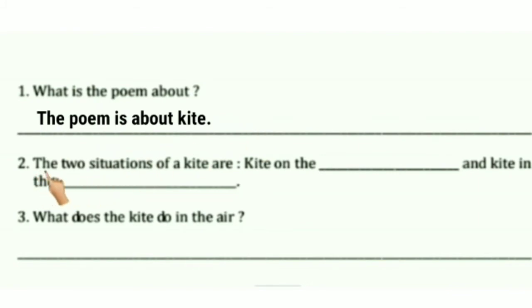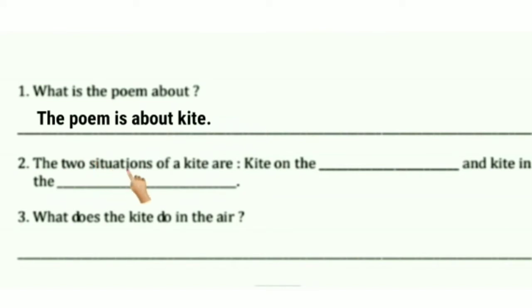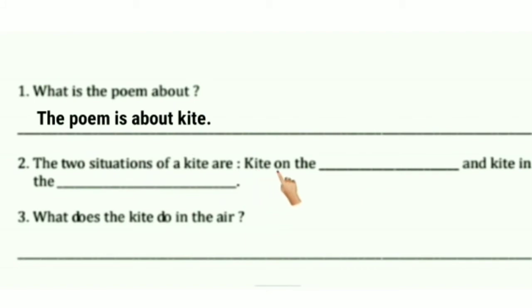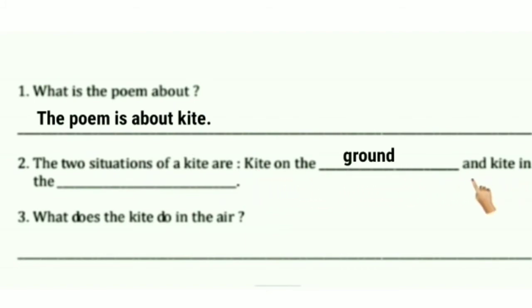Question 2: What are the two situations of a kite? The two situations of a kite are: kite on the ground, and kite in the air.